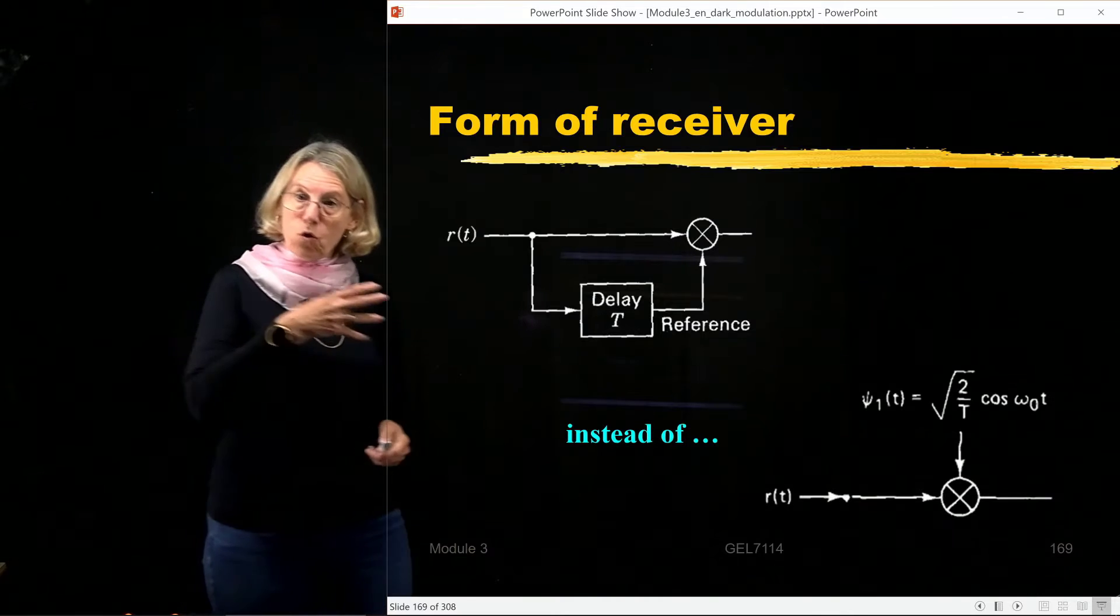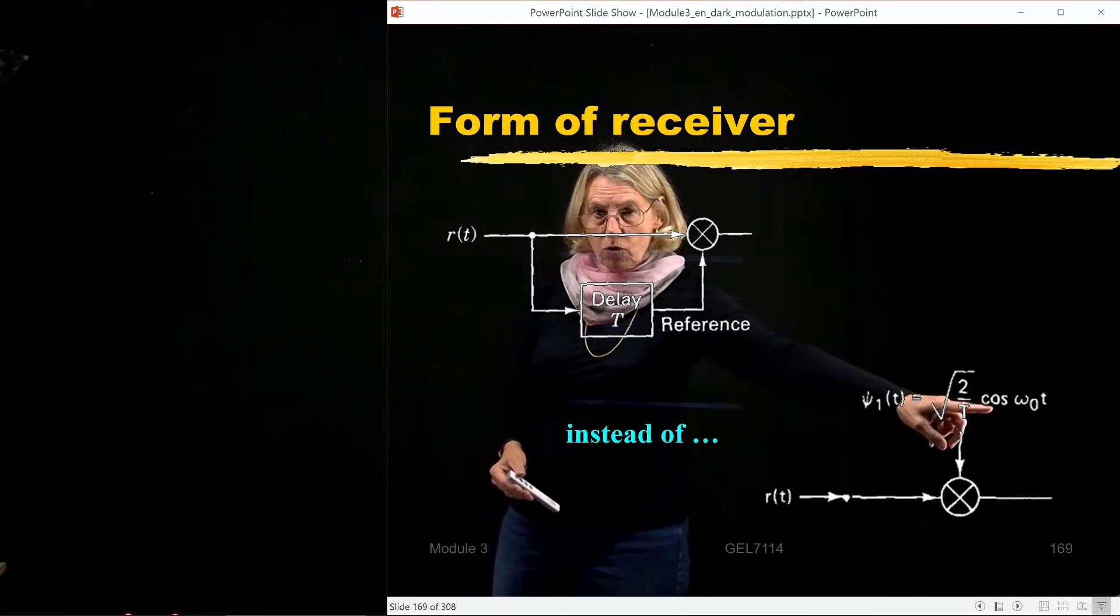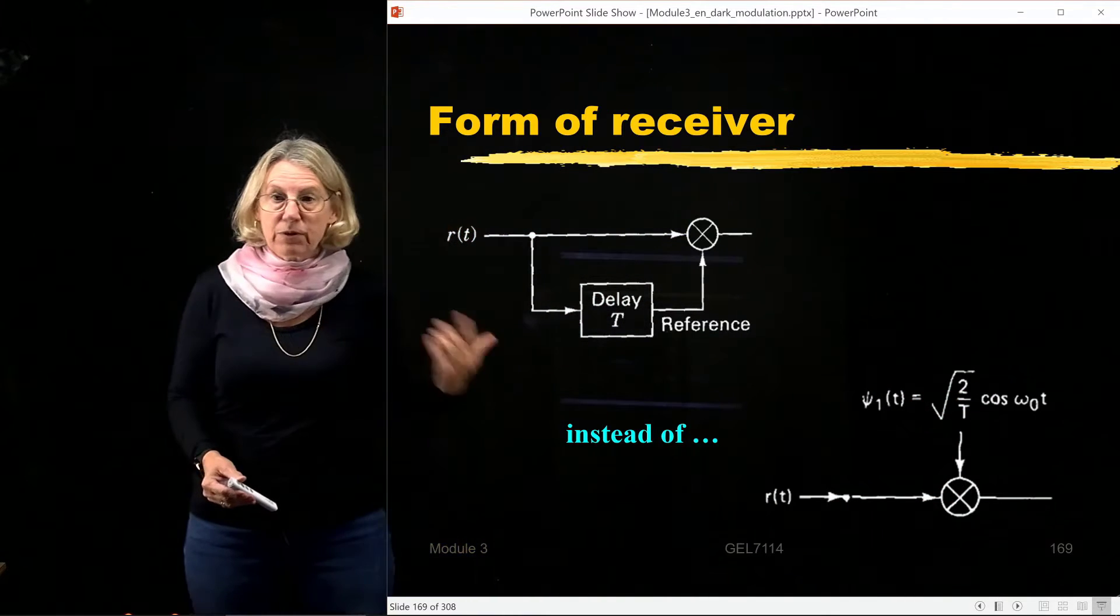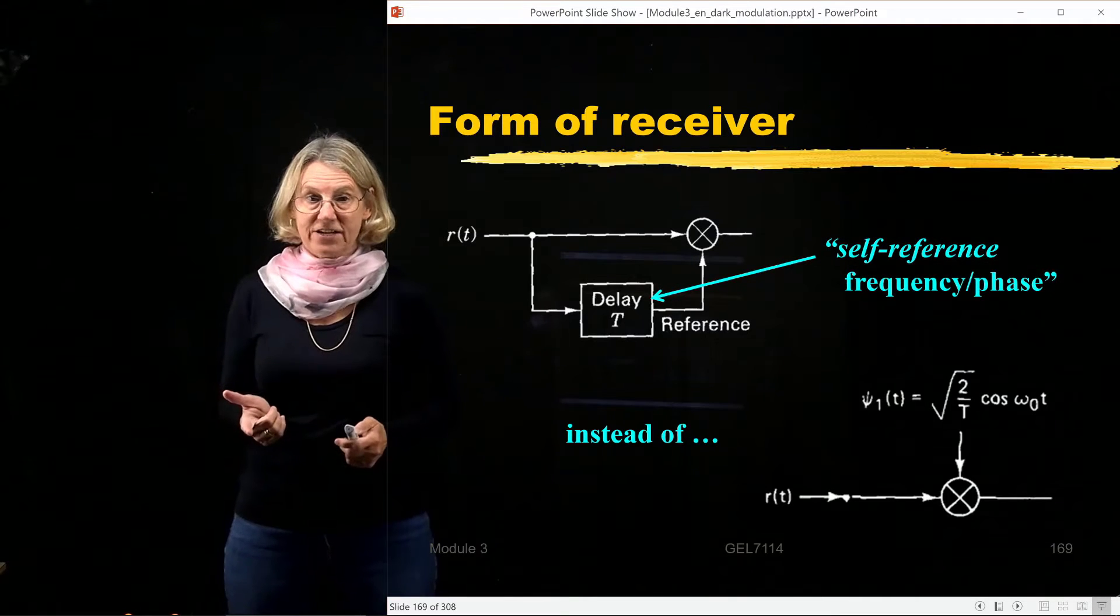So remember, in coherent detection, what did I do? I took the receive signal and I had my own local oscillator at the same carrier frequency that I would use for correlation. But now, in this case, for non-coherent detection,